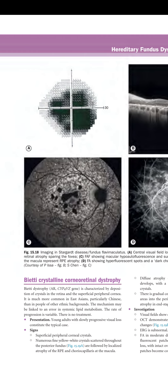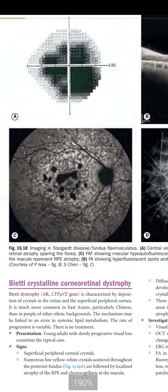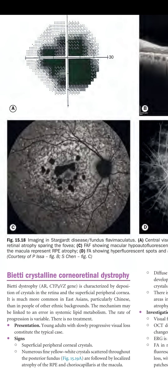Bietti crystalline corneoretinal dystrophy is an autosomal recessive condition caused by the CYP4V2 gene. It is characterized by deposition of crystals in the retina and the superficial peripheral cornea. It is much more common in East Asians, particularly Chinese. The mechanism may be linked to an error in systemic lipid metabolism. The rate of progression is variable and there is no treatment.